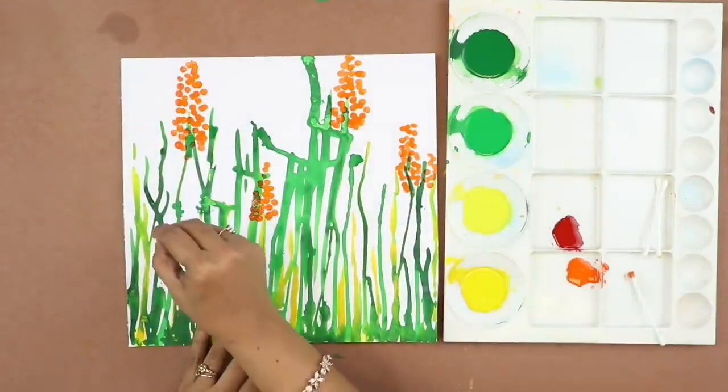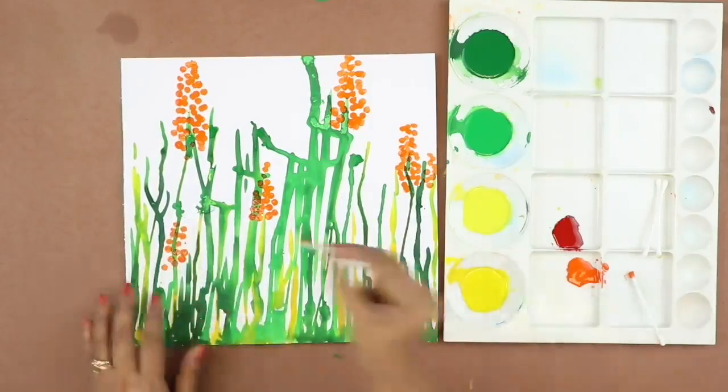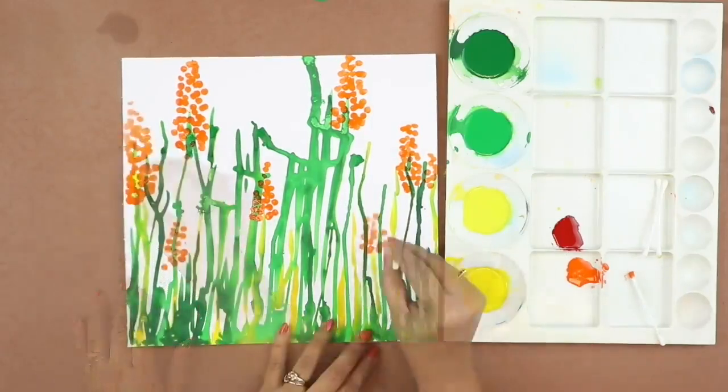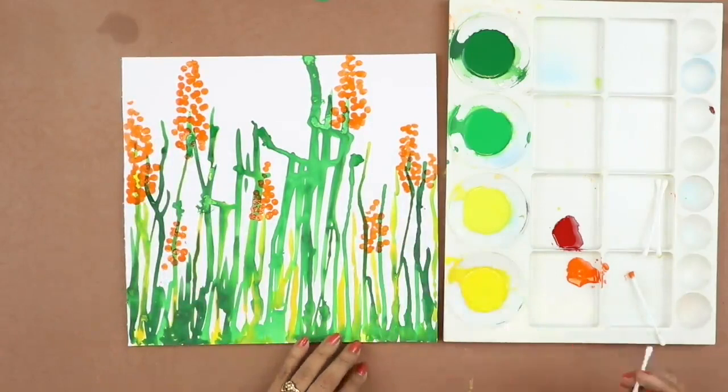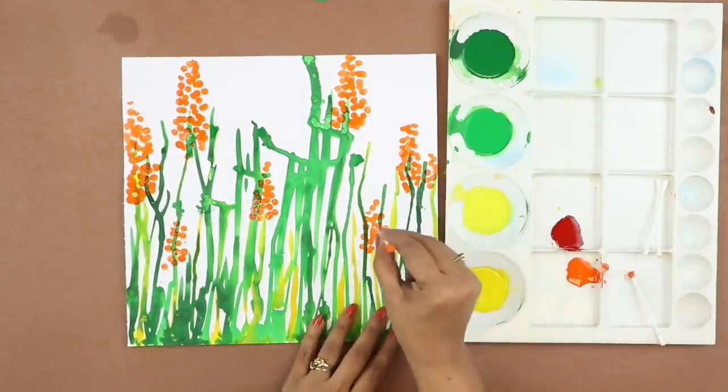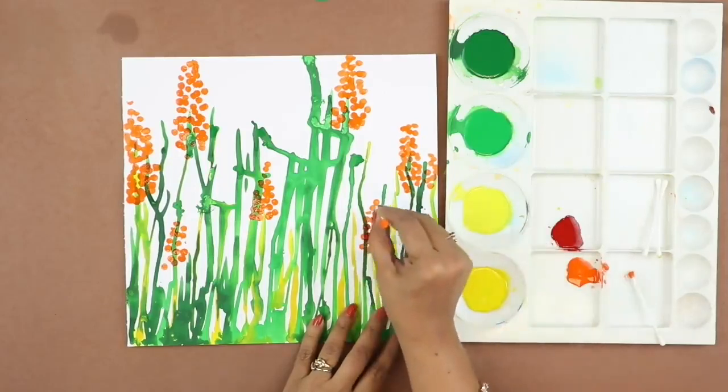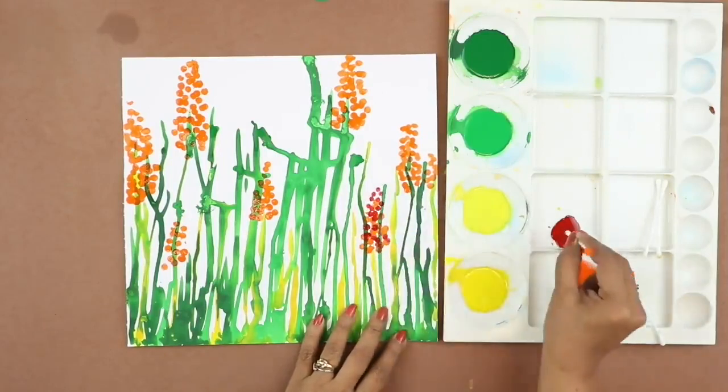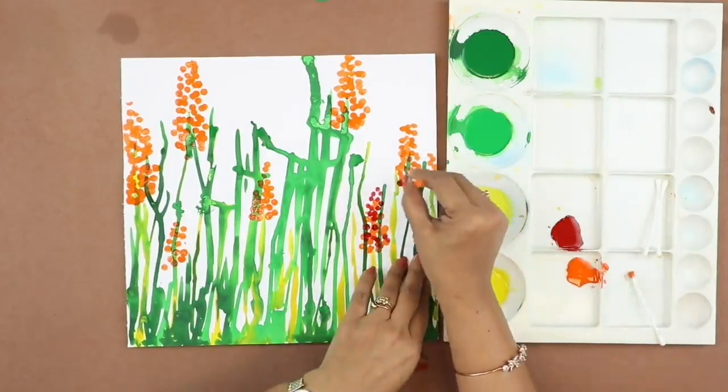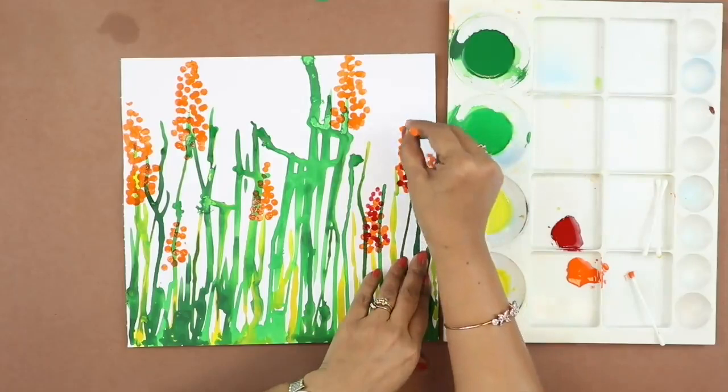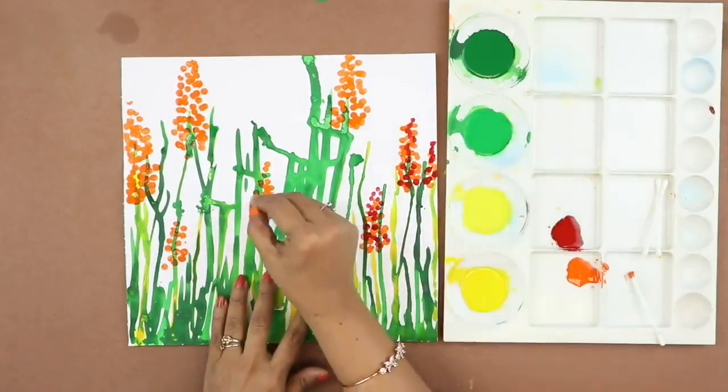So these look like some wild flowers that grow in the grass. I'm taking red color and mixing it with the orange, print just some prints here and there.